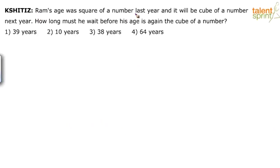Ram's age was square of a number last year and it will be cube of a number next year. How long must he wait before his age is again the cube of a number? So basically, there is a guy called Ram whose age was square of a number last year and will be cube of a number next year.